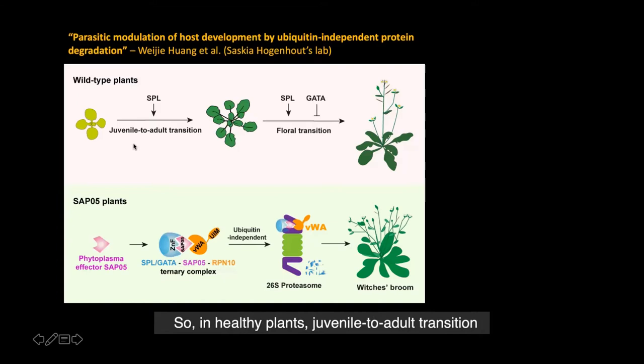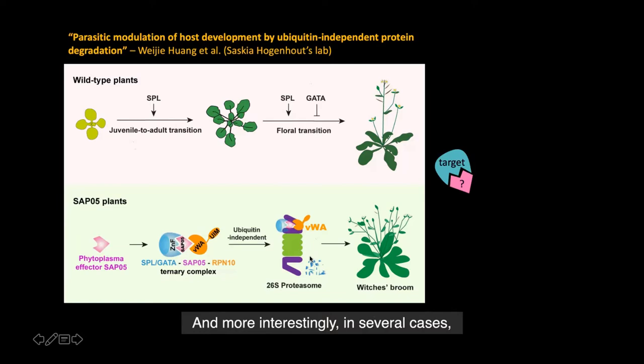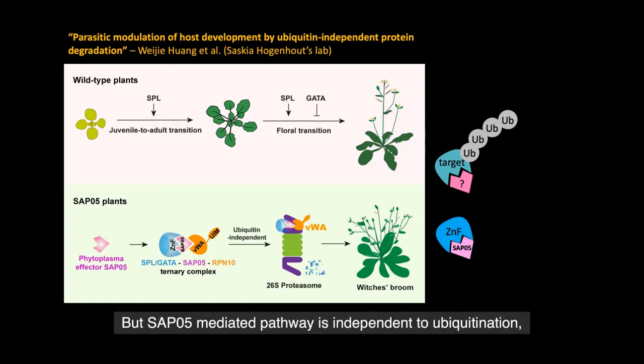In healthy plants, juvenile to adult transition is regulated by transcription factors, namely SPL and GATA. In phytoplasma-infected plants, SAP05 binds to and leads to degradation of these transcription factors. More interestingly, in several cases, phytoplasma leads to ubiquitination of host proteins that leads to degradation. However, the SAP05-mediated pathway is independent of ubiquitination.